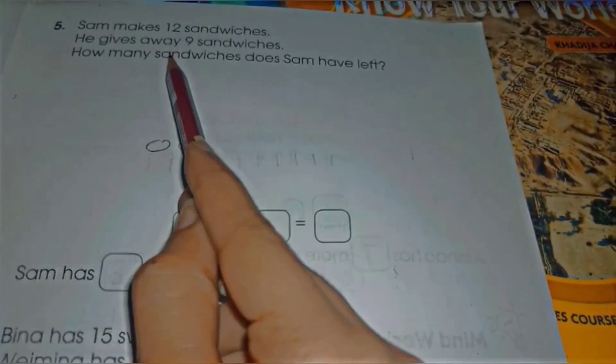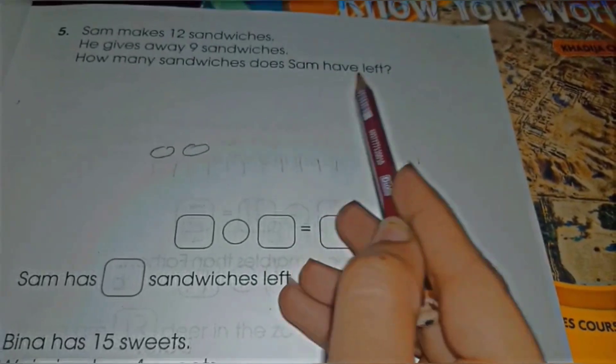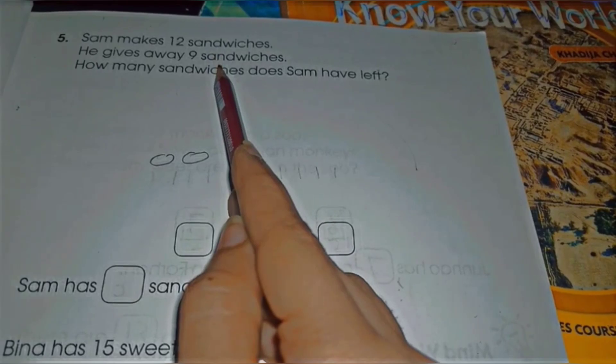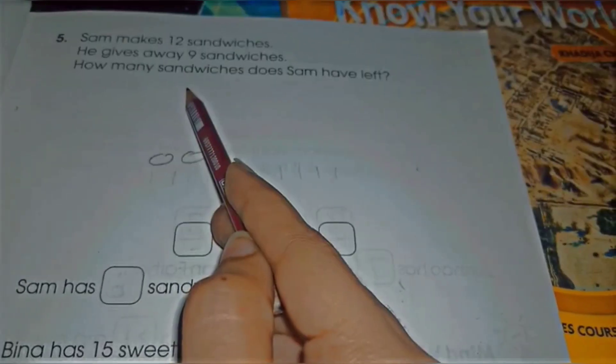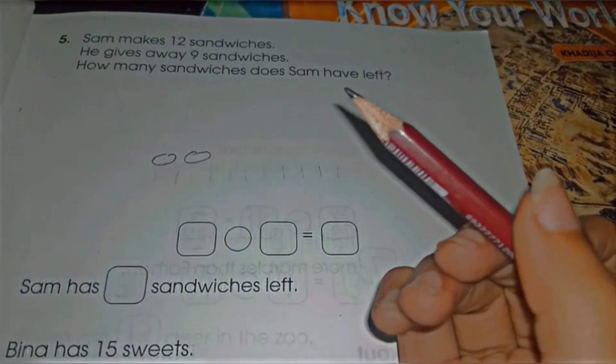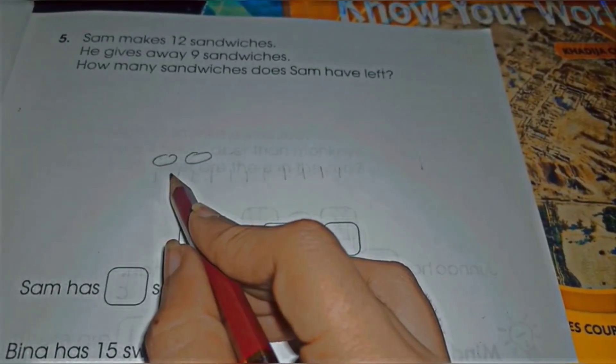How many sandwiches does Sam have left? It means Sam needs to have 12 sandwiches and she gives 9 sandwiches. Now how many sandwiches have left? So it's a subtraction question, right? We can assume that these are the sandwiches.